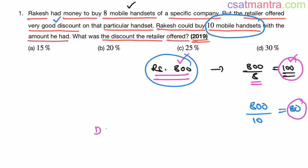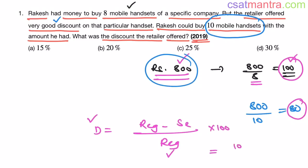The discount formula is: (regular price minus selling price) divided by regular price, multiplied by 100. Discount is always calculated on the regular price. So: (100 minus 80) divided by 100, multiplied by 100. The 100s cancel, leaving 20. So the discount is 20%, and our answer is B.